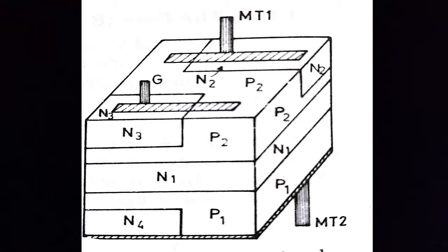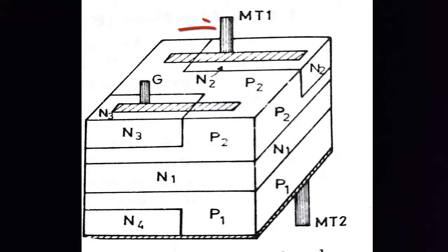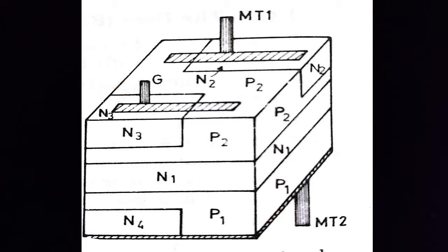This is the cross-sectional view of a TRIAC. As a TRIAC can conduct in both directions, the terms anode and cathode are not applicable to TRIAC. So its three terminals are usually designated as main terminal 1 (MT1), main terminal 2 (MT2), and the gate G, as in a thyristor.